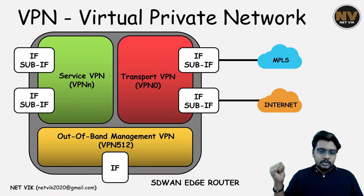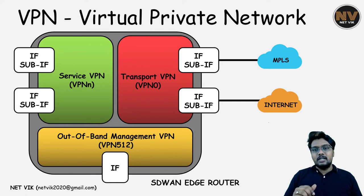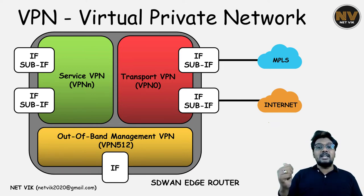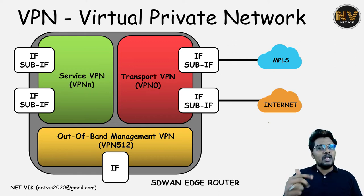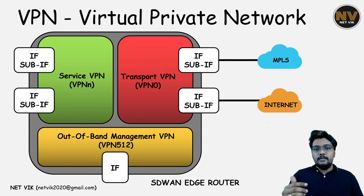The grey box you see here represents a managed router. On a high level, the managed router is segregated into three separate VPNs. In Cisco SD-WAN, VPN is nothing but VRFs in your traditional routers. We have a transport VPN — the red one in my slide — and if you see, it also has an ID written which is VPN0.